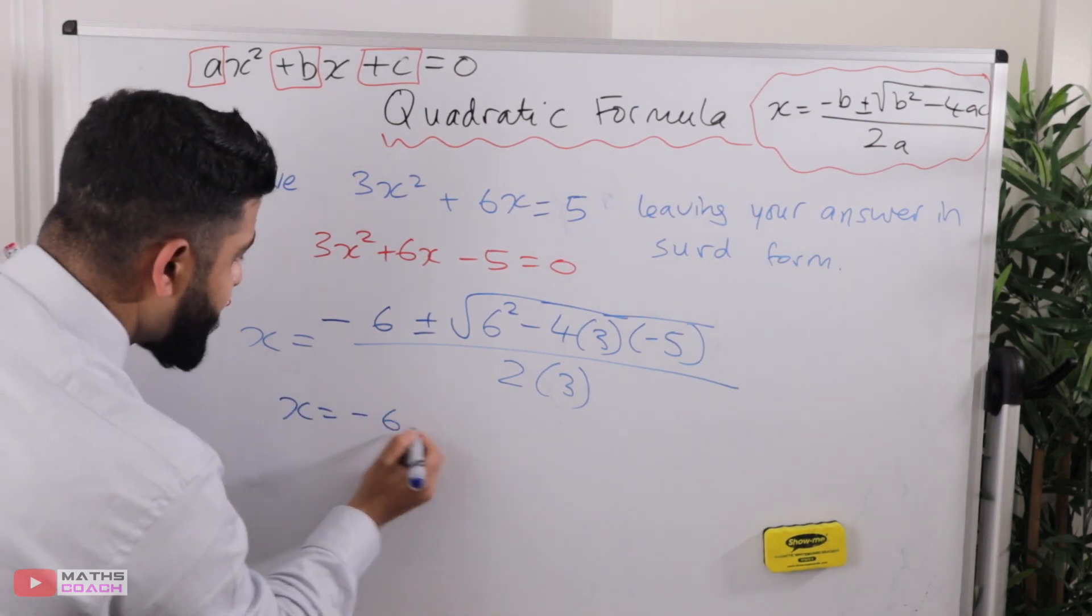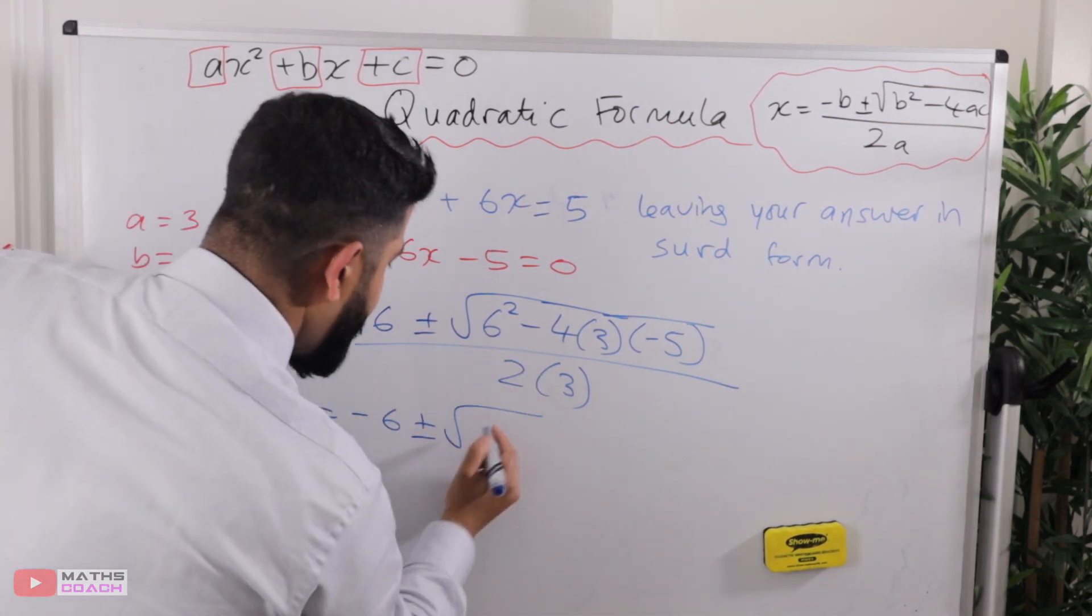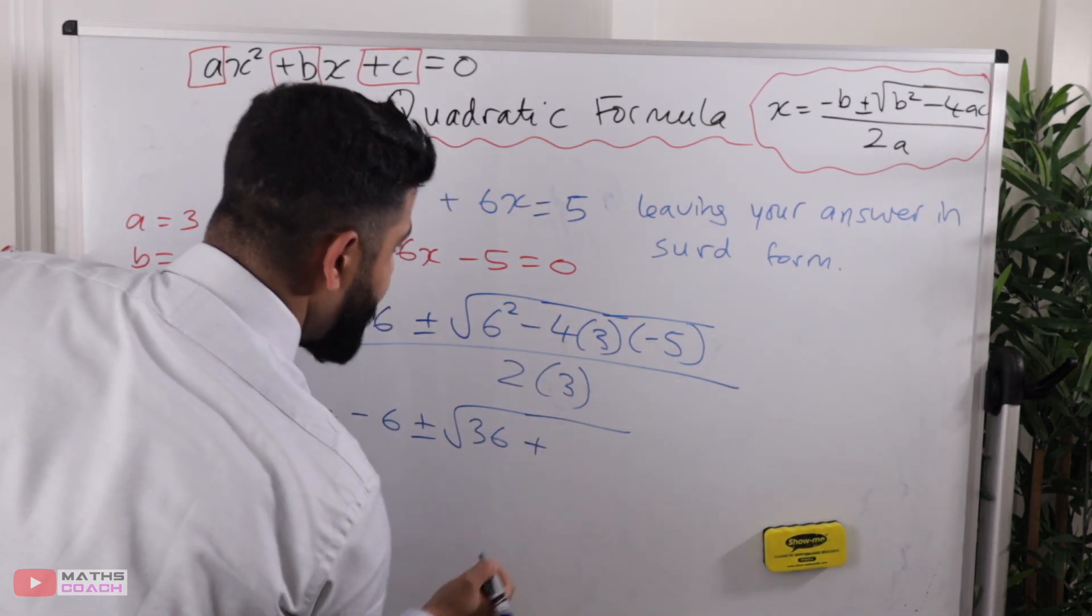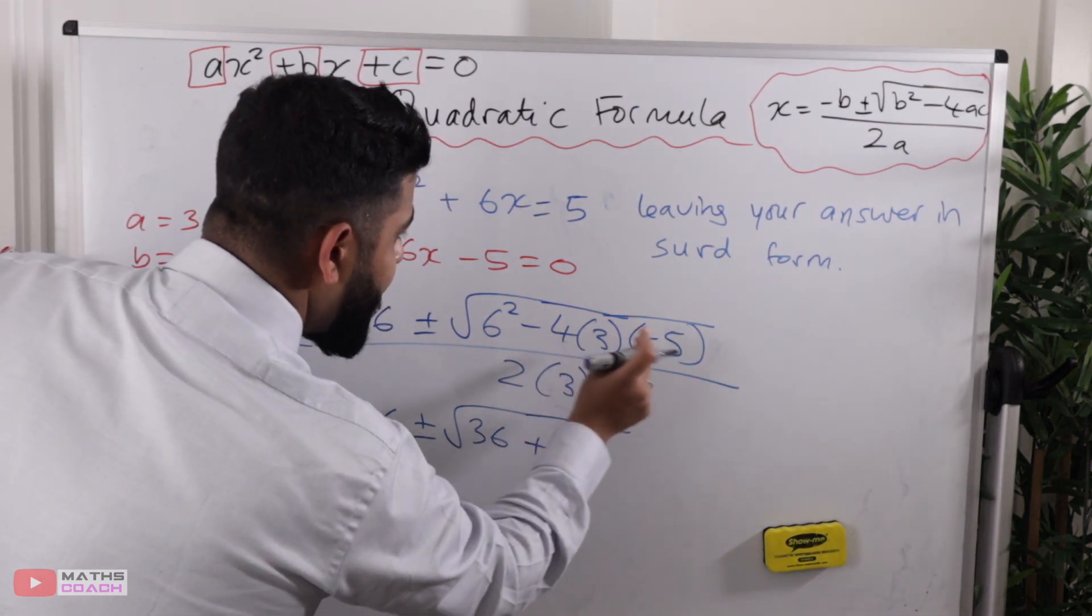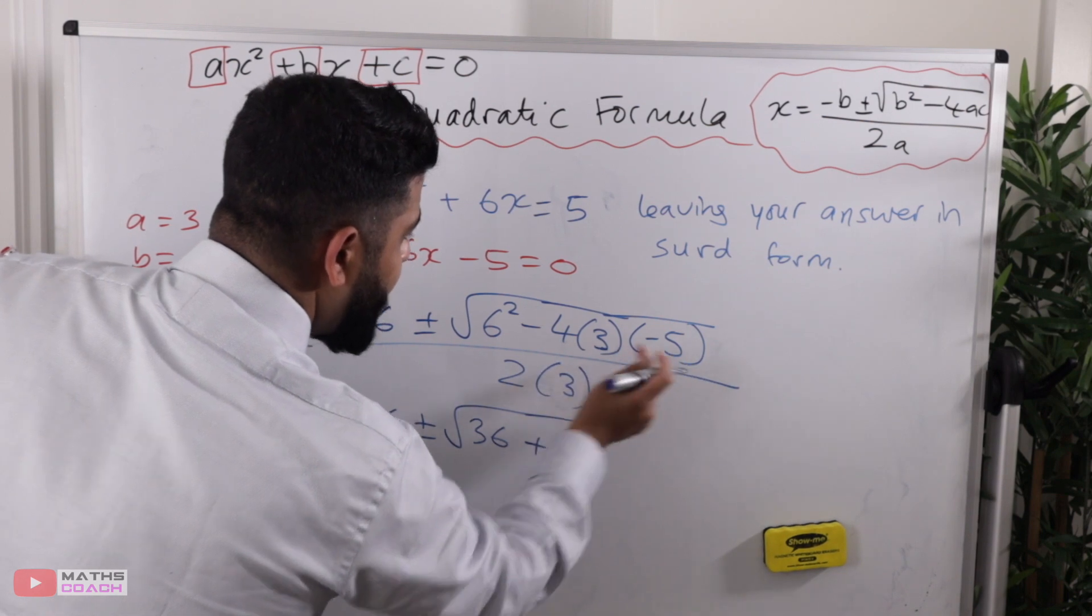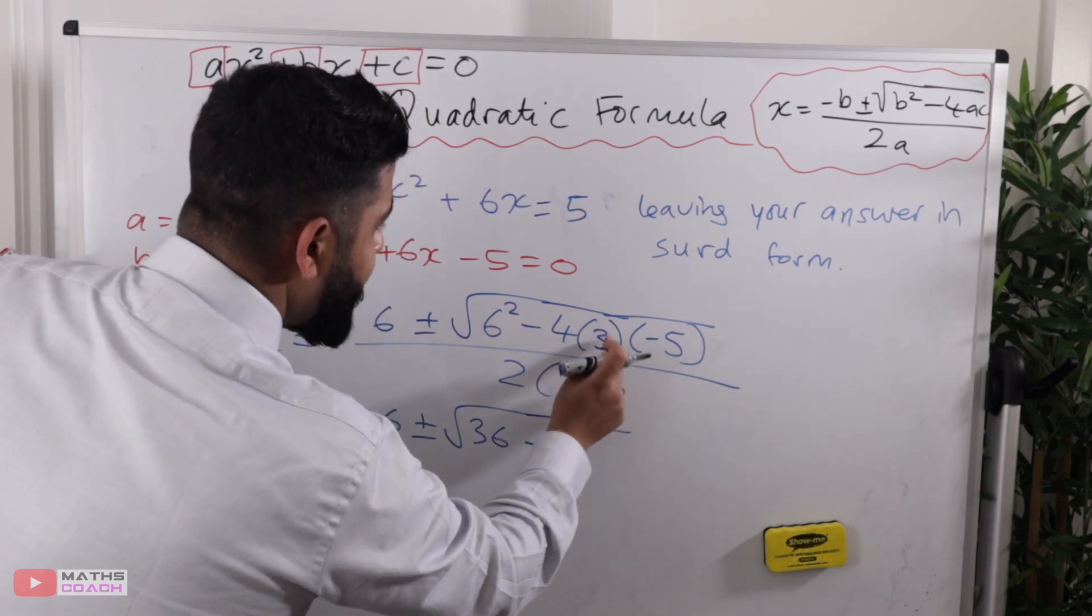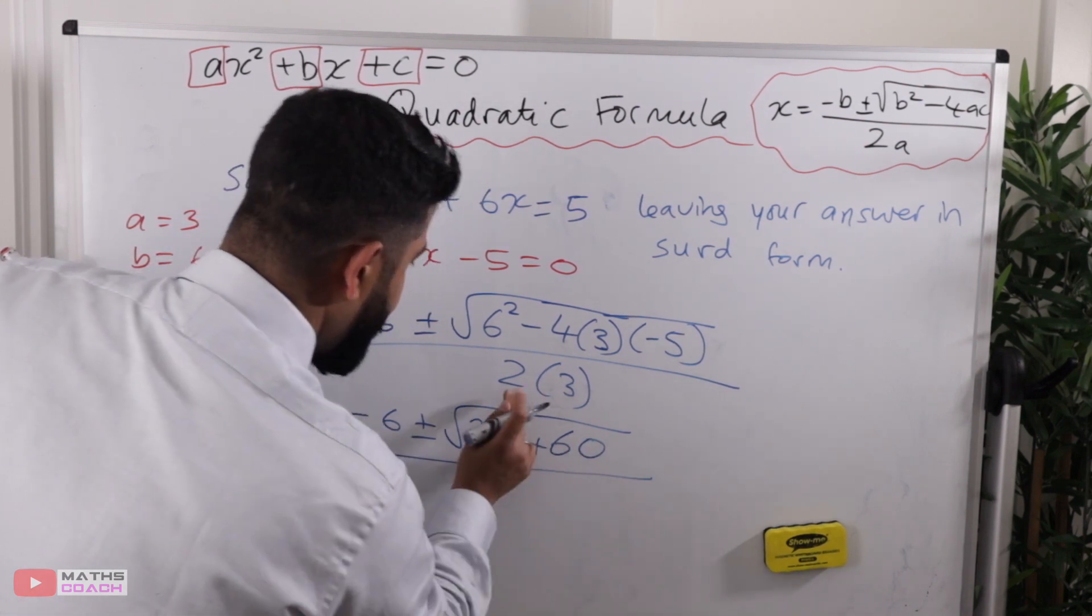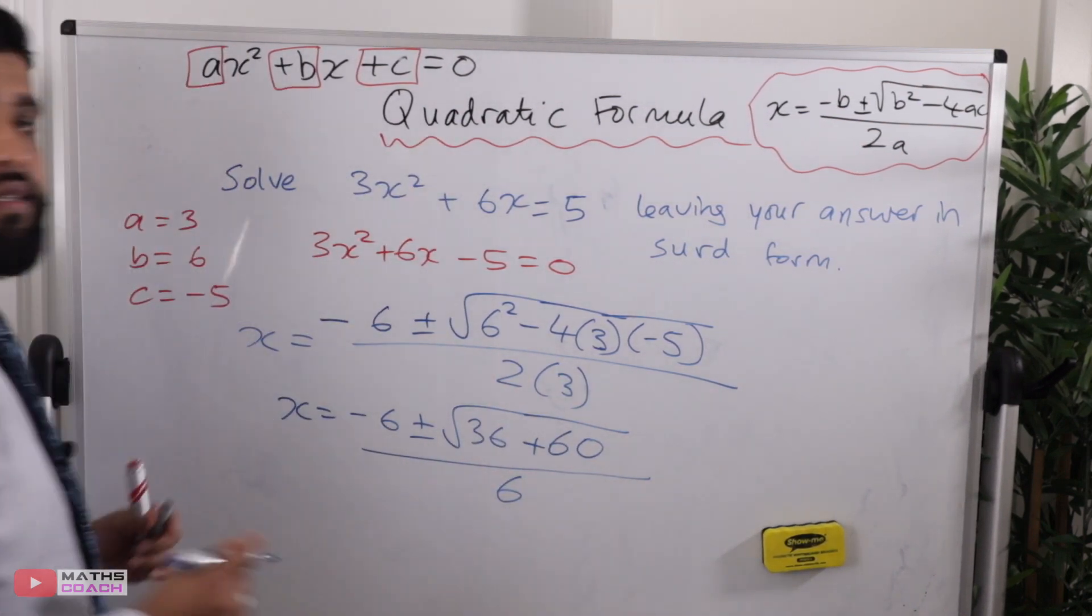We have minus 6 here. We have 36 minus, and a minus once again, plus. And then we have 4 times 3 times 5. So 4 times 5 is 20, 20 times 3 is 60. So that's going to be 60 here. And then 2 times 3, which is 6.